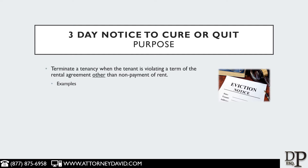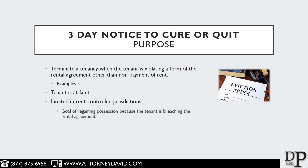Some examples would be if the tenant-landlord agreement says no smoking is allowed but your tenant is smoking, or the lease says no pets but the tenant has pets. These are two examples of when you would use a three-day notice to cure or quit. It is known as an at-fault eviction because you're evicting the tenant based on a fault that the tenant is causing — they are violating the rental agreement. This can be differentiated from a 30 or 60 day notice that a landlord might serve to terminate a month-to-month tenancy.